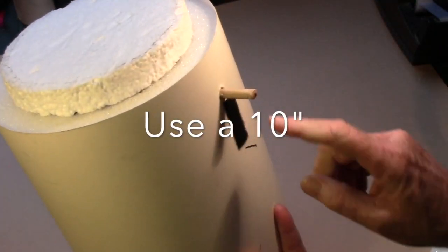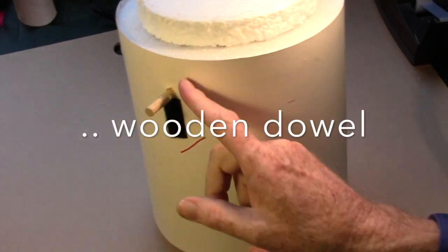Next you'll need a wooden dowel that's about 10 inches in length. Cut holes on both sides and slide it through.